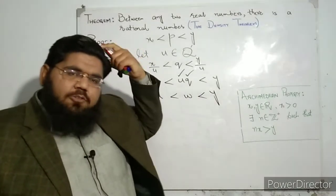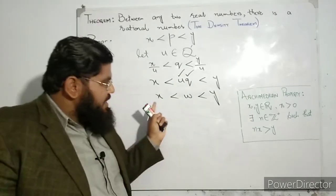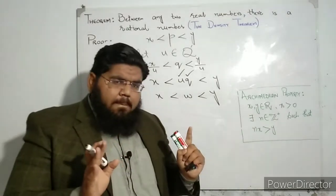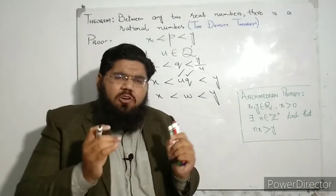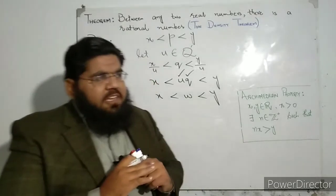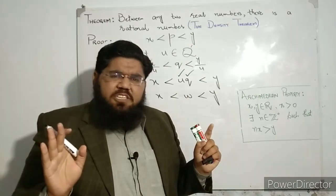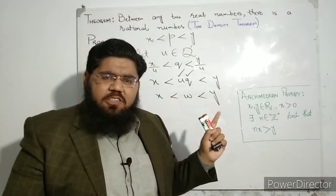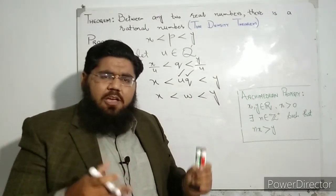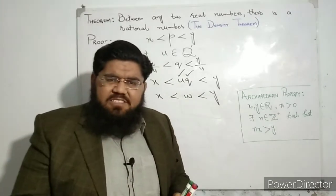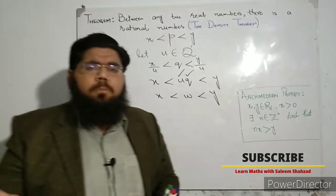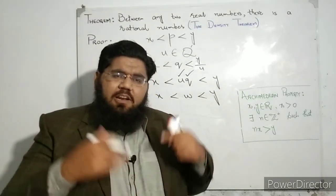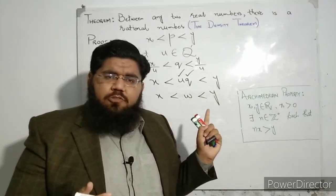Using the property that between any two reals there is a rational, we have successfully proved that between any two real numbers there is an irrational as well. This helps us understand the real number system — not just that there are many rationals and irrationals, but that these two sets are so closely packed within the real number system. These results will help us move on to prove the completeness property and other properties of the real number system, and I hope this will be useful in your real analysis course.